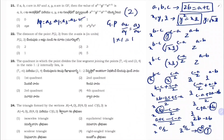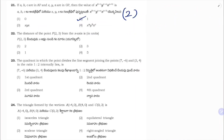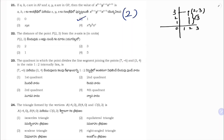The distance of point P(2, 3) from the x-axis. If distance from x-axis is asked, take the y-value. The point 2, 3 is at a distance of 3 units from the x-axis. If distance from y-axis is asked, take the x-value. Here they ask from x-axis, so y-value = 3. Correct answer is option 2, which is 3.